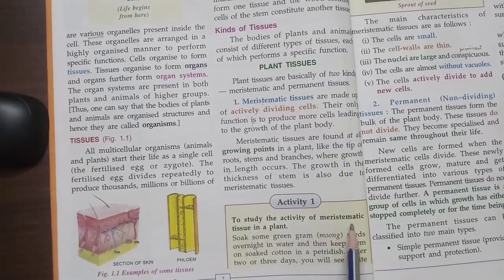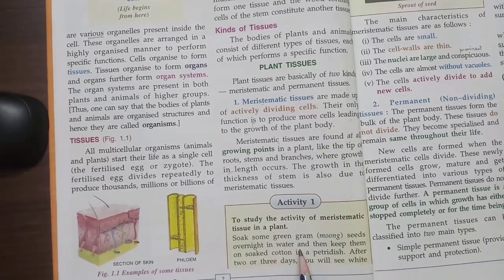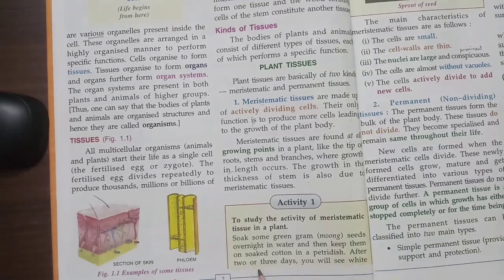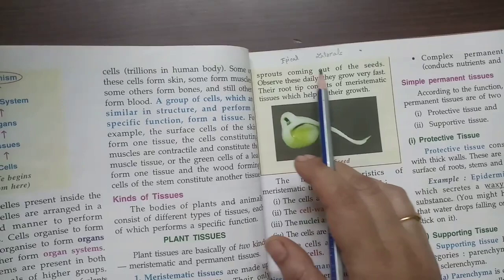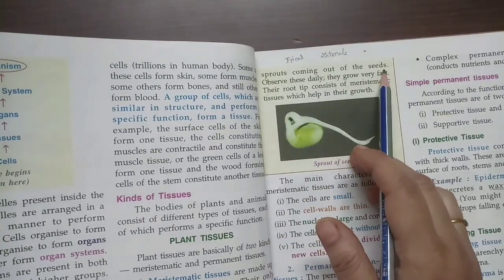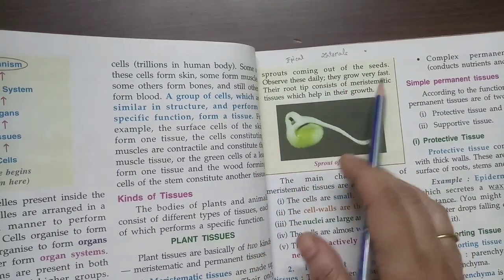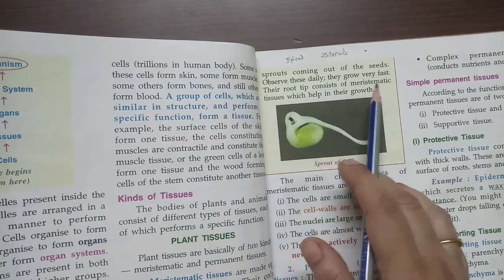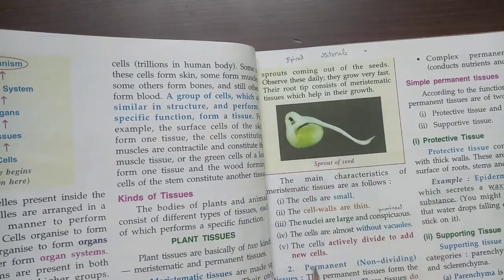To study the activity of meristematic tissue in a plant, soak some green gram seeds overnight in water and then keep them on soaked cotton in a petri dish. After two or three days, you will see white sprouts coming out of the seeds. Observe this daily — they grow very fast. Their root tip consists of meristematic tissues which help in their growth.